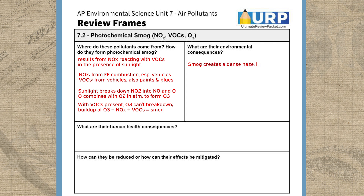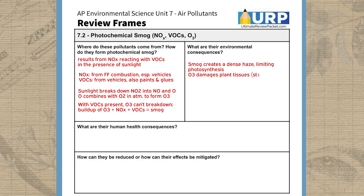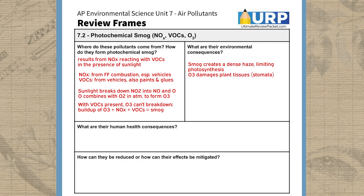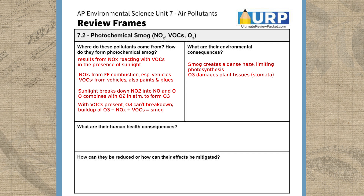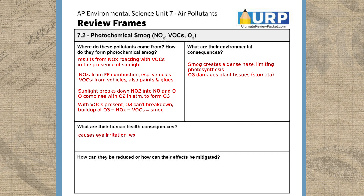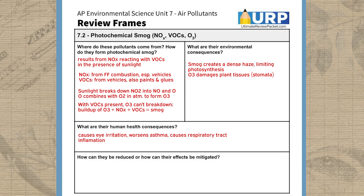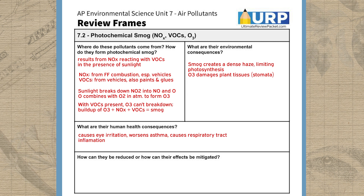Since its buildup results in a dense haze, photochemical smog can lower photosynthetic rates in plants by decreasing sunlight penetration, and it can also directly damage plant stomata. From a human health standpoint, photochemical smog can cause eye irritation, worsen existing asthma, and even lead to respiratory tract inflammation. When it comes to mitigating the effects of photochemical smog, we're going to want to target its two main ingredients: NOx and VOX.